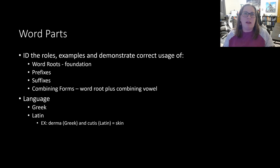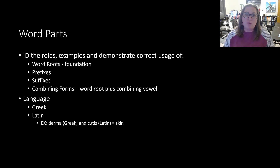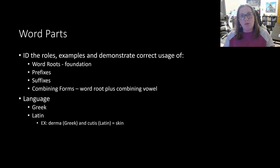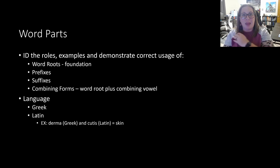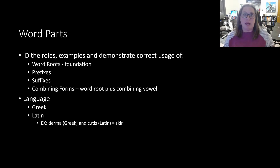A lot of these medical terms are going to be based in normally one of two languages: Greek and Latin. They're really important when breaking down words, because sometimes pieces mean the same thing in Greek or Latin but the word root is a little different. For example, 'derma' is the Greek root for skin, while 'cutis' is the Latin root for skin. So 'dermal' and 'cutaneous' both pertain to the skin — two different ways based on the language.